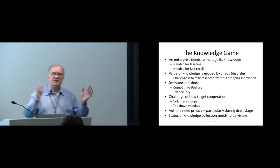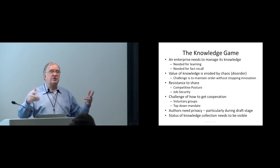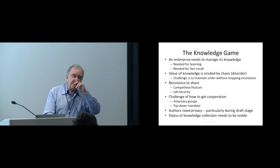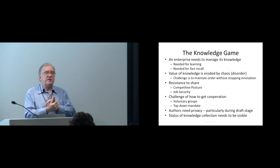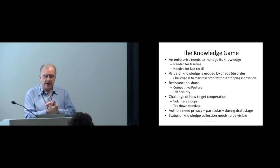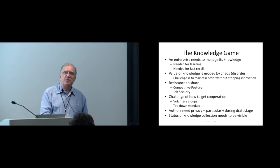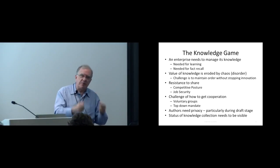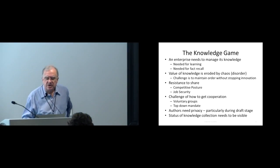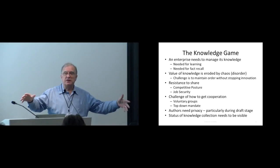How do you get cooperation? Voluntary groups and top-down mandate — these are not exclusive of each other. Authors need privacy while doing their drafting. If you're working on something and haven't submitted it yet, you need privacy. You need the full strength of supporting tools to help you, so you're not offline, but you want that privacy. And the status of knowledge collection needs to be visible: how much are we actually collecting, who's doing it, and how far have they got?